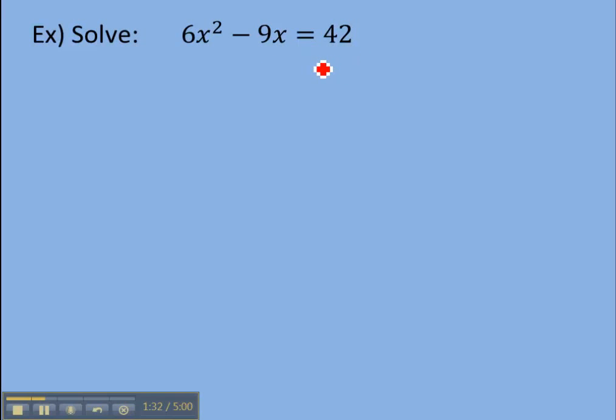So to move this 42 over to the left side, we're going to subtract it. So we're going to subtract 42 here, we're going to subtract 42 here. On the right side they're going to cancel, and we're going to be left with 6x squared minus 9x minus 42 equals zero. Notice 42 didn't really combine with anything on this left side because it was not a like term. It doesn't have an x with it or an x squared, so it's got to be its own term at the end.